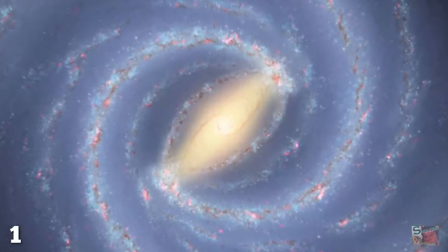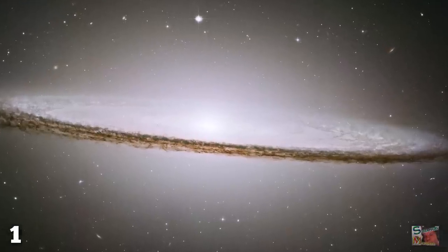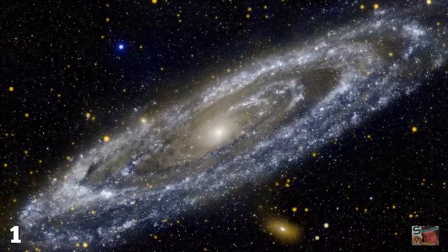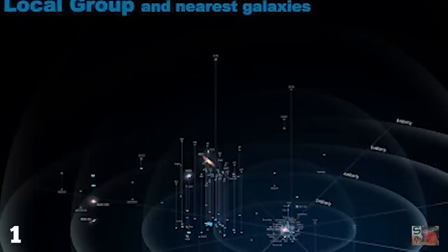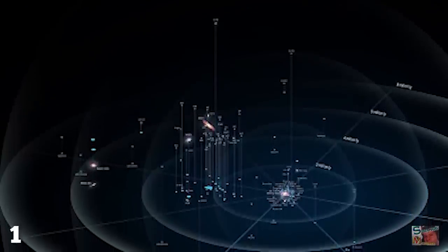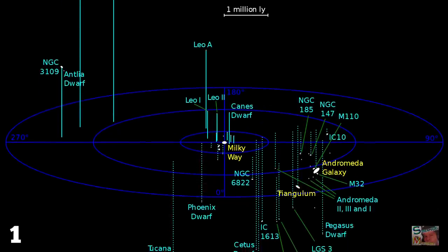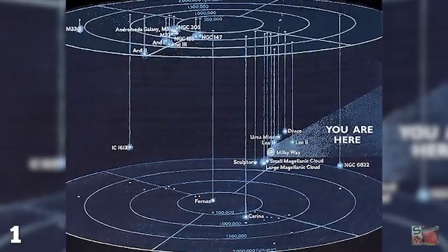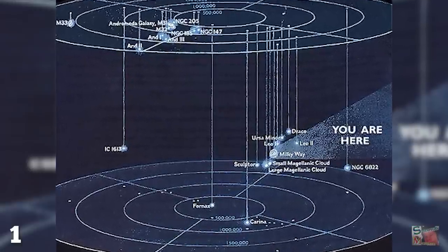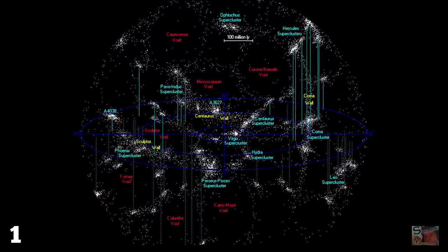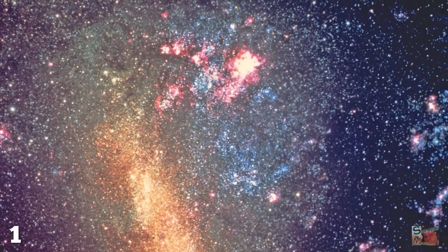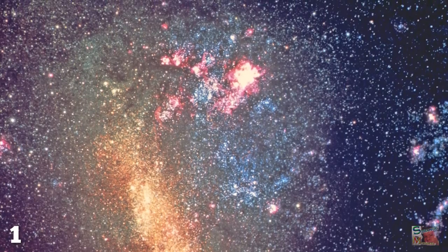24 quintillion kilometers out, we'll find the next galaxy, Andromeda, with both this and the Milky Way forming part of the Local Group, which itself measures 62 quintillion kilometers across. Our Local Group makes up part of a supercluster 1.2 sextillion kilometers wide, and this is but one of many superclusters, with the entire realm of the observable universe comprising 860 sextillion kilometers, which is 860 followed by 21 zeros.